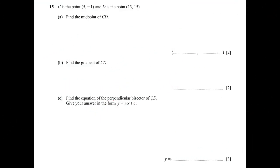Question 15: find the midpoint of CD. To find the midpoint of CD, the midpoint equals (5 + 13) / 2 and (-1 + 15) / 2, and the answer will be (9, 7).